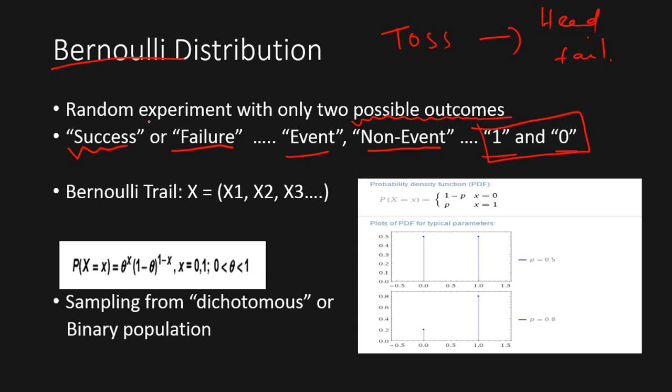We define Bernoulli trial as a set of these random experiments. Each one of these random experiments has an outcome, and each outcome is associated with one random variable. The Bernoulli trial is a set of random variables x1, x2, up to xn, where n is the number of trials or number of experiments associated with this particular trial.